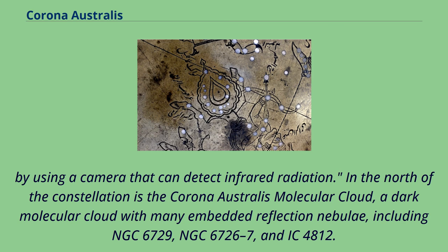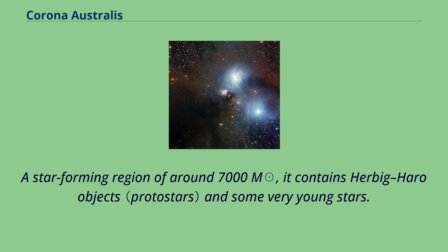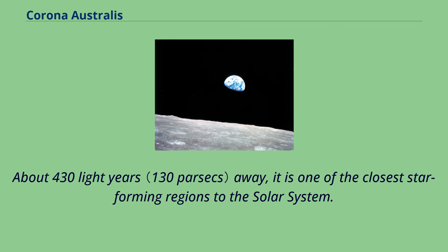In the north of the constellation is the Corona Australis Molecular Cloud, a dark molecular cloud with many embedded reflection nebulae, including NGC 6729, NGC 6726-7, and IC 4812. A star-forming region of around 7,000 solar masses, it contains Herbig-Haro objects and some very young stars. About 430 light-years away, it is one of the closest star-forming regions to the solar system.